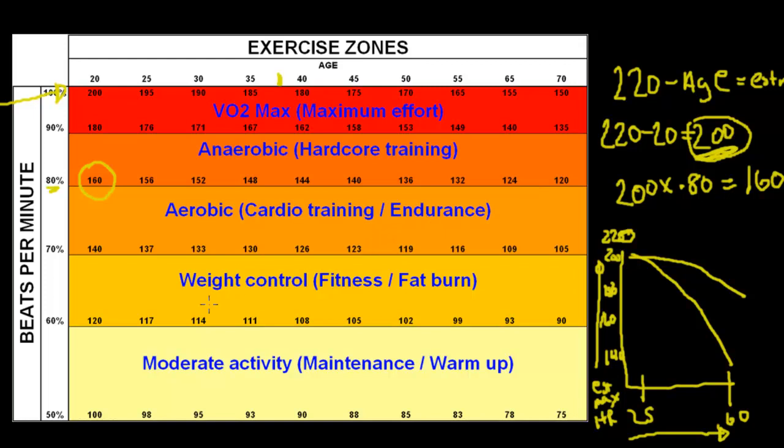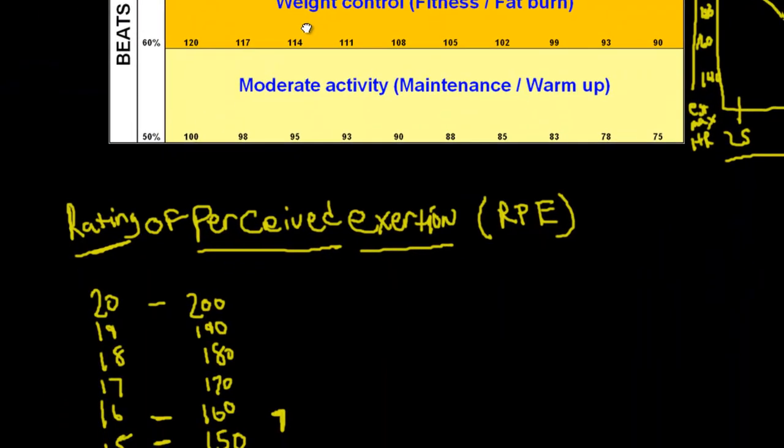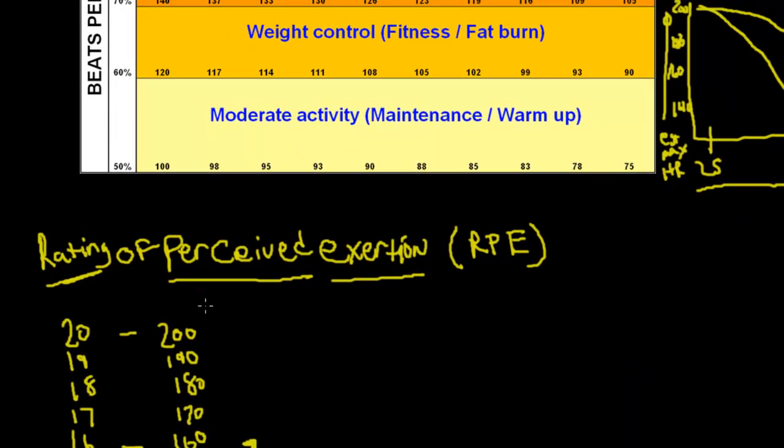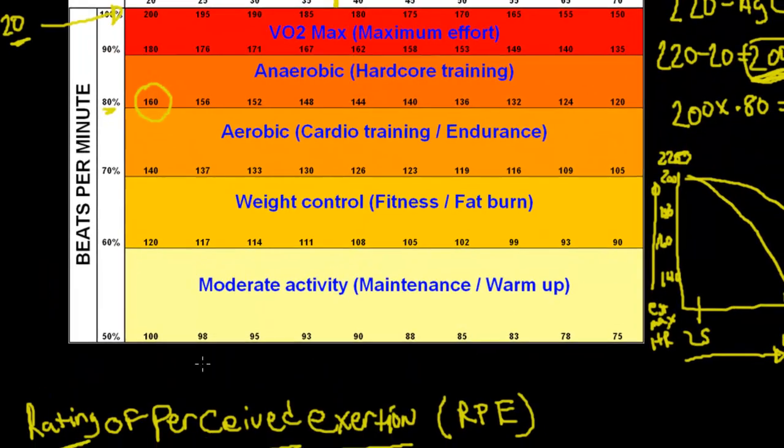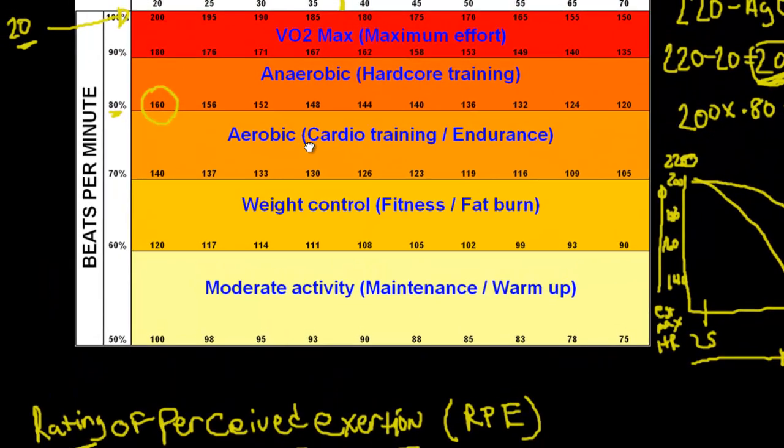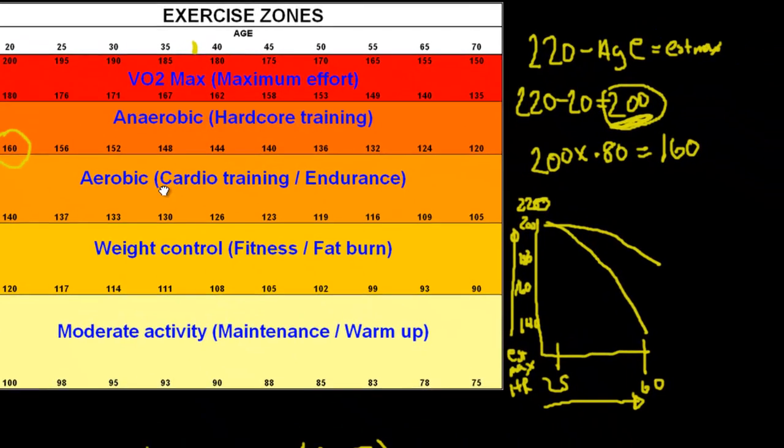So I hope this helped explain rating of perceived exertion, how it's tied into heart rates and estimated max heart rates. So that way you can link the two together. And I hope you kind of understand this principle of if you continue to train, especially do aerobic training throughout your life, you can slow the rate of decline. So you can keep your level of fitness much higher than it ever could be if you didn't train at all.